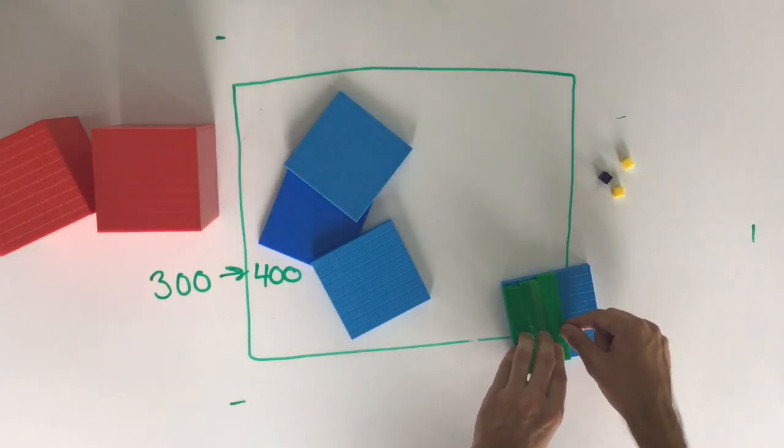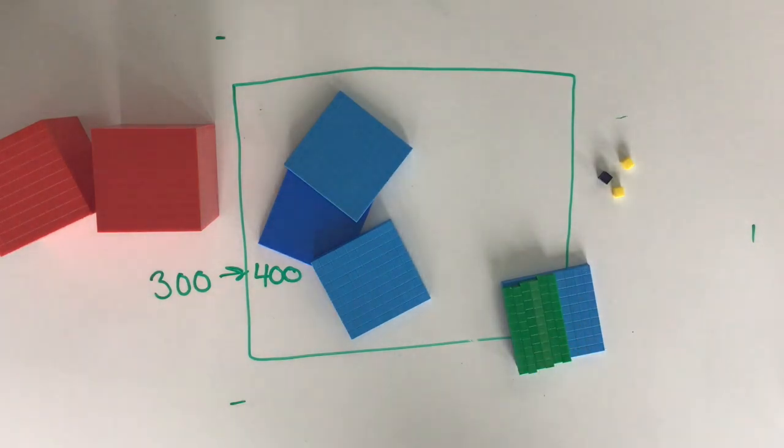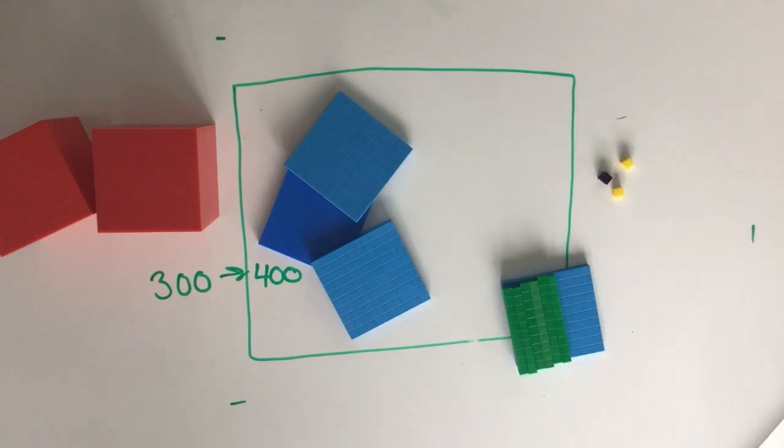Another good way of seeing whether you need to round up or down is looking to see if half or more of the hundred is covered. Here you can see that we need to round up because we've got six tens, which is 60.